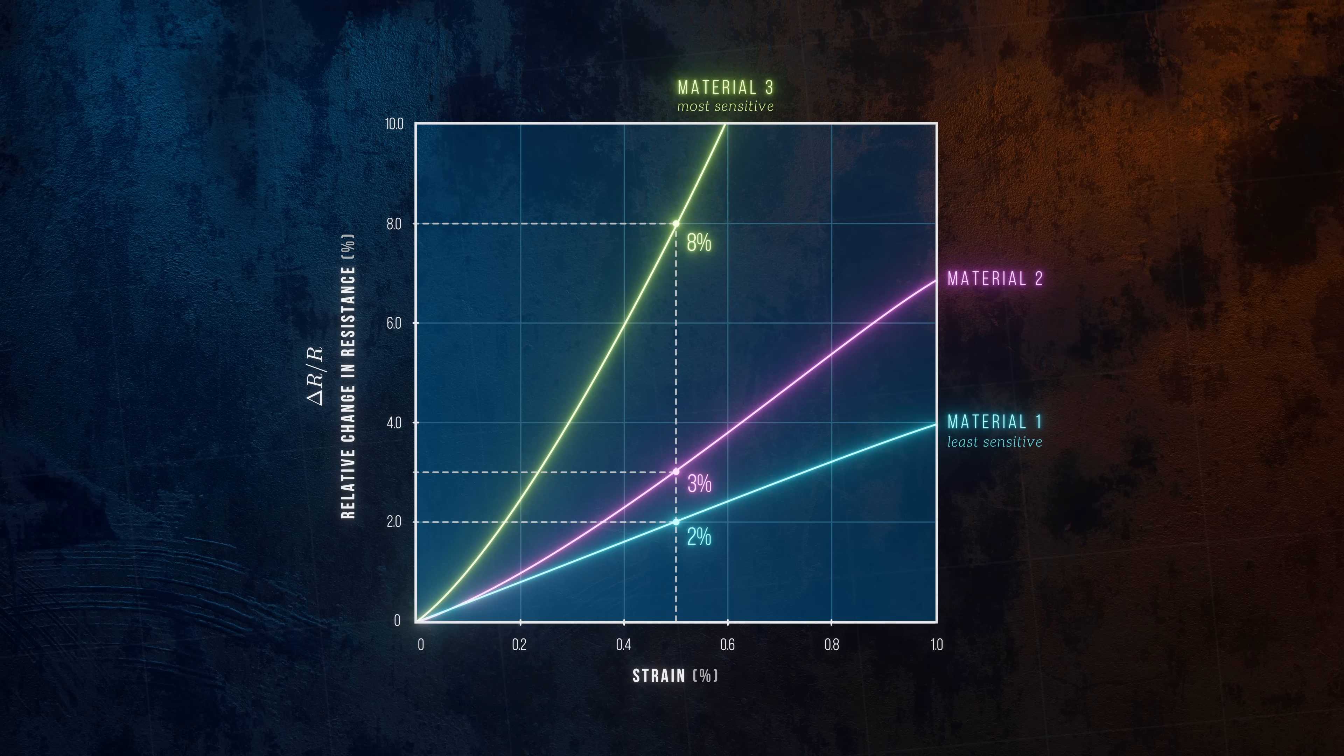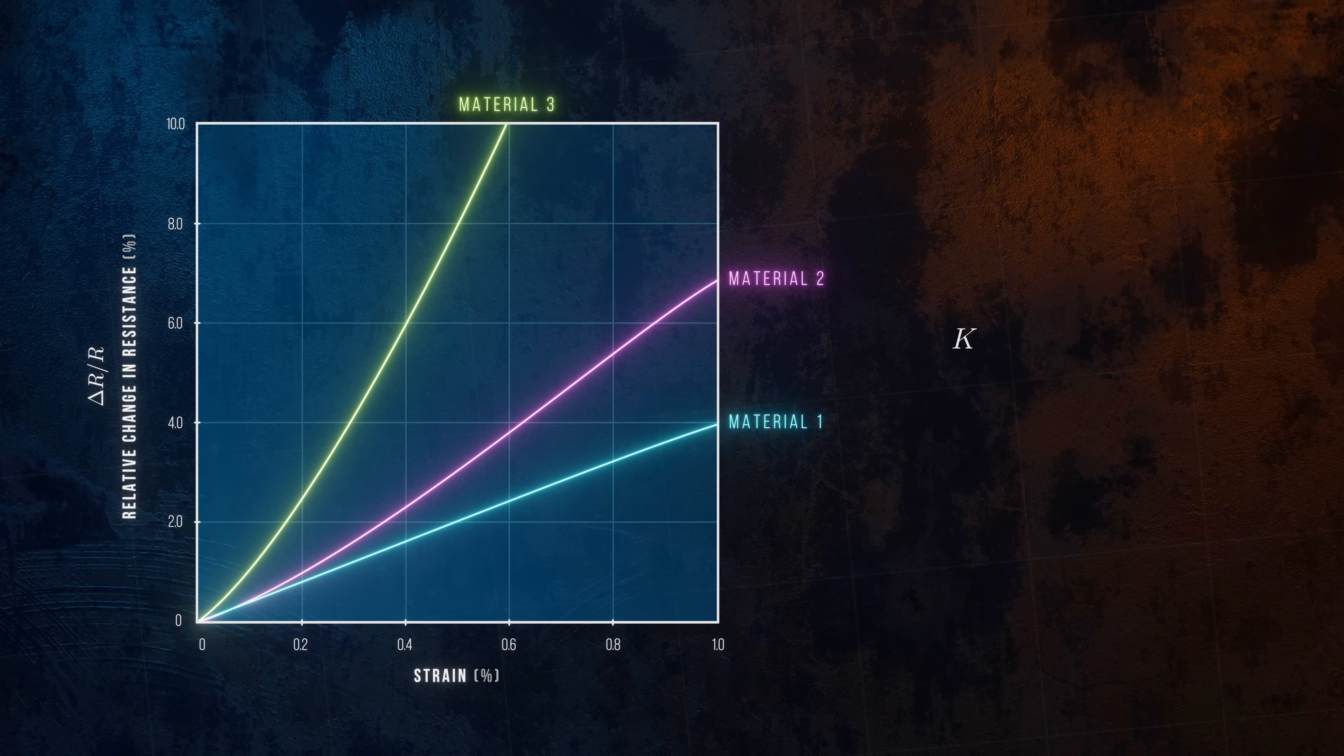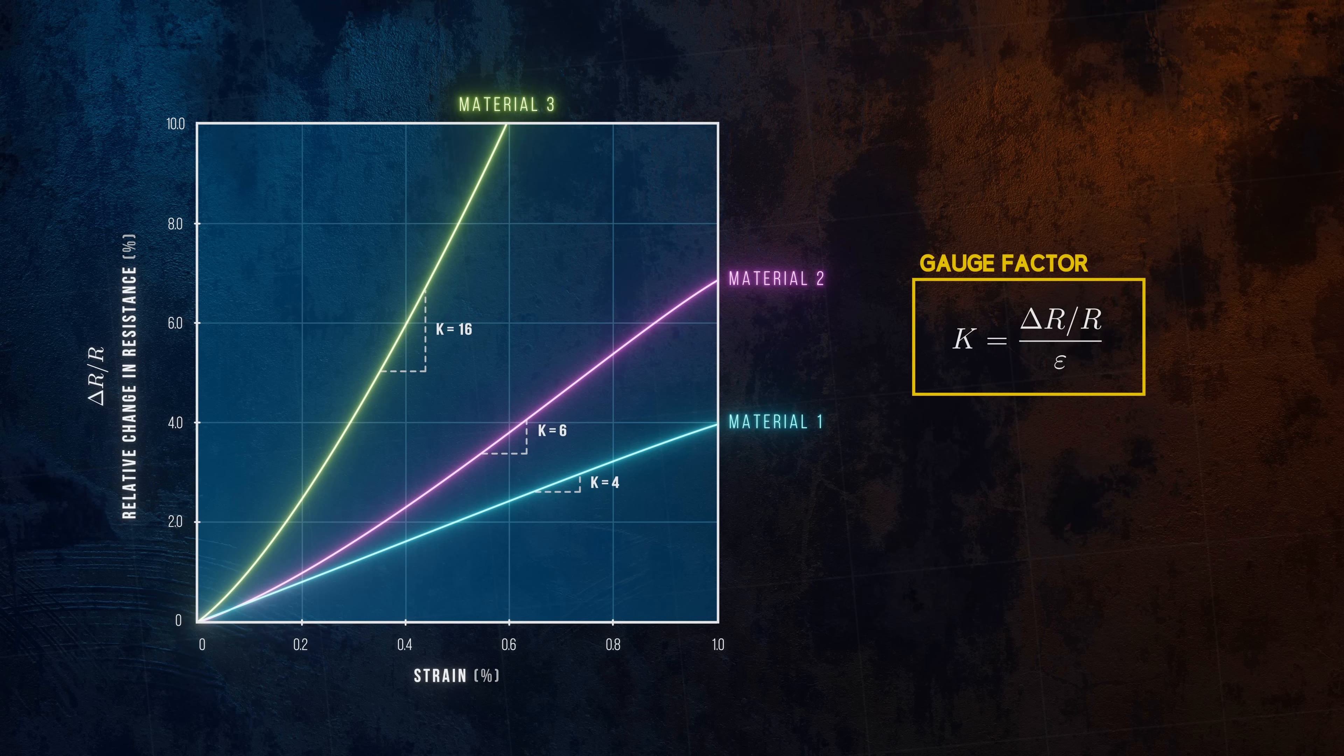The sensitivity of a strain gauge is defined using a parameter called the gauge factor, K, which is defined as the relative change in resistance divided by the corresponding strain. It represents the slope of the curve in this graph. If a material has a gauge factor of 10, for every 1% of strain, the electrical resistance of the strain gauge will increase by 10%.